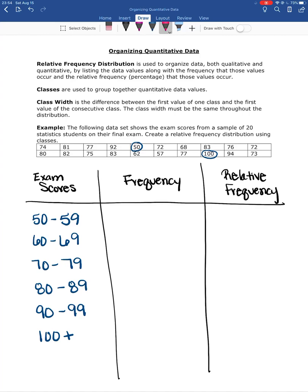So now we talked about the class width and how it needs to be the same throughout the distribution. That's the difference between the first number in the first group and the first number in the consecutive group. So here we see we have a width of 10. There's a difference of 10 between 50 and 60. Then the next difference, 60 to 70, is also a difference of 10. So again, our class width is 10. 70 to 80, 80 to 90, 90 to 100 all of those have a difference of 10.